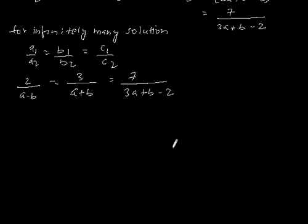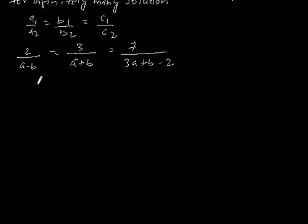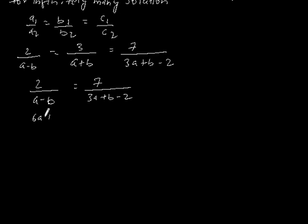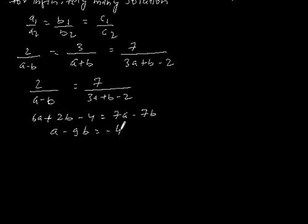Now let's solve this. Taking 2 by (A minus B) equal to 7 by (3A plus B minus 2), by cross multiplication we get 3A plus B minus 4 is equal to 7A minus 7B. Solving this, we get A minus 9B is equal to minus 4. Let's say this is equation 3.